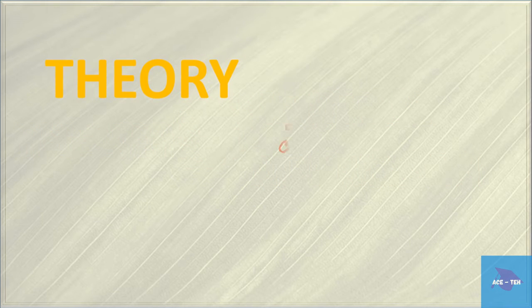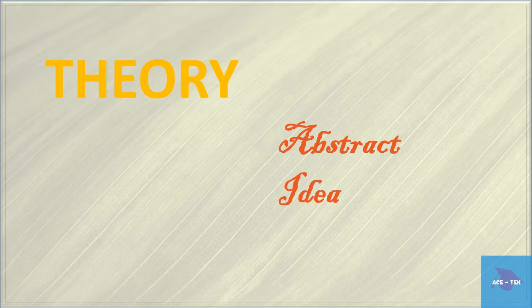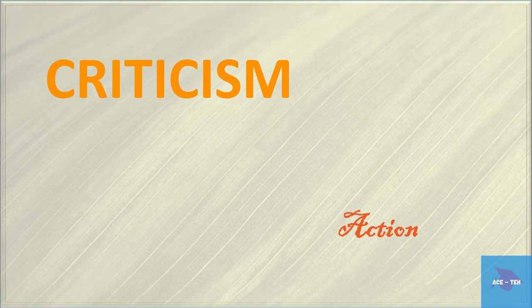Literary theory is abstract. It is an idea, a set of rules, whereas literary criticism is action. To understand this in a simple way, let's first discuss what came first, theory or criticism.